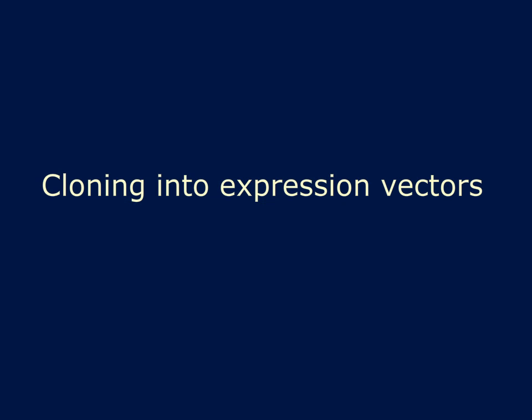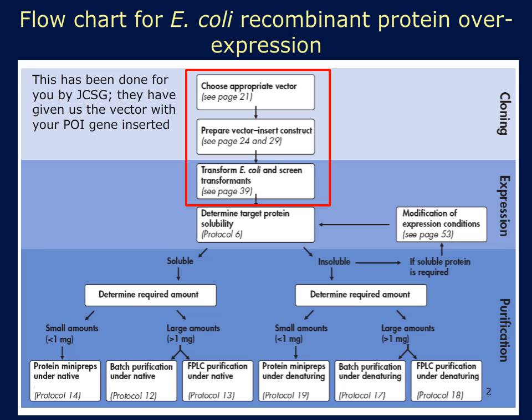Although the Joint Center for Structural Genomics has provided your clones for you, we wanted to make sure that you knew how they were generated. So this mini-lecture will cover the cloning of a gene into an expression vector. This slide shows a flowchart generated by the company Kiogen that outlines how you would go from gene to protein using E. coli recombinant protein over-expression. The first two steps in the red box are the steps that have been done by the Joint Center for Structural Genomics for you.